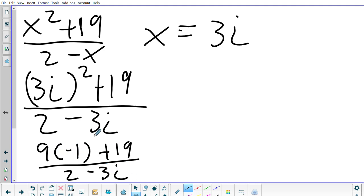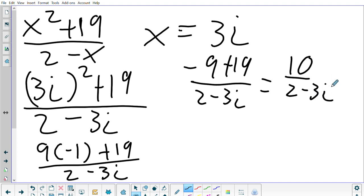9 times negative 1 is negative 9 plus 19 all over 2 minus 3i. I would add these together and I get 10 over 2 minus 3i. The only issue with stopping here is we do not like i to be on the bottom of the fraction. So what we do is we multiply which is known as the conjugate.